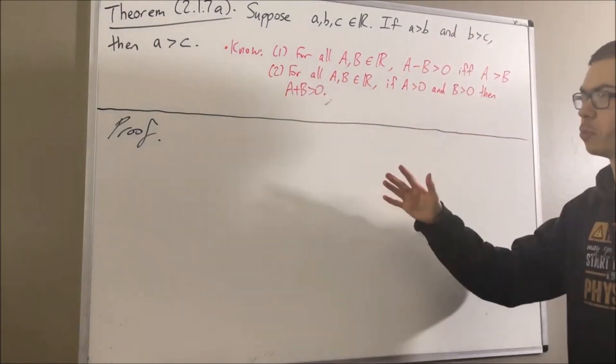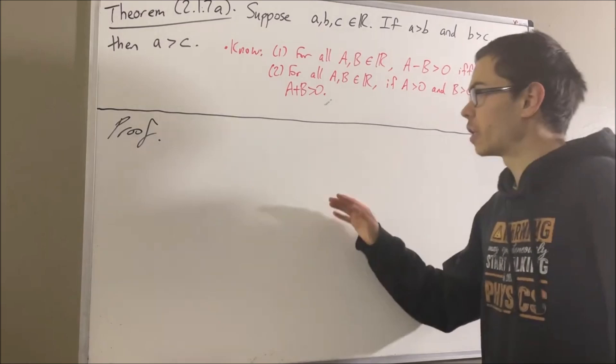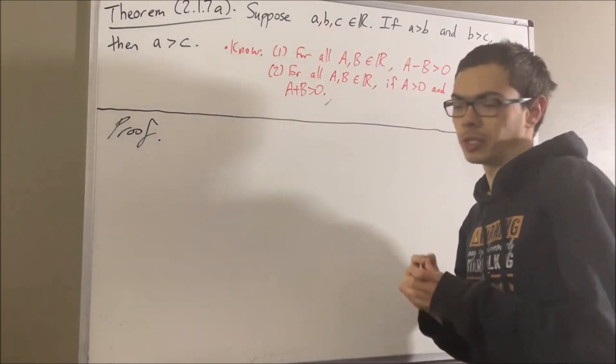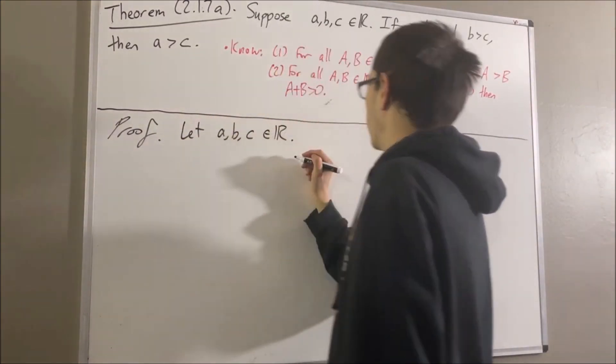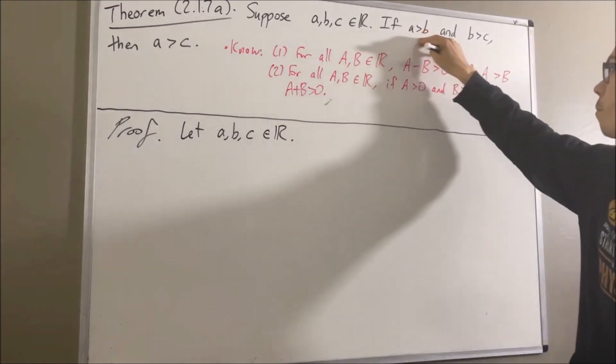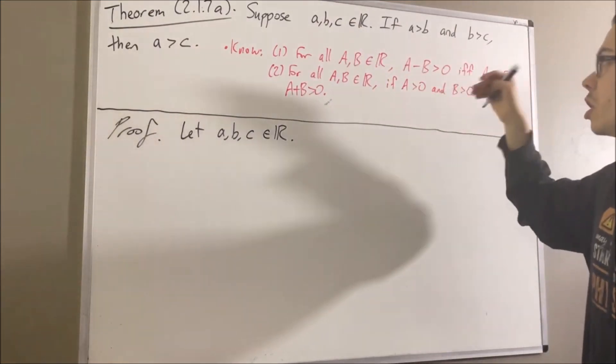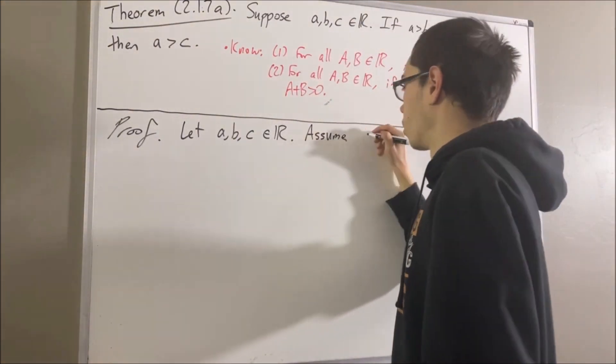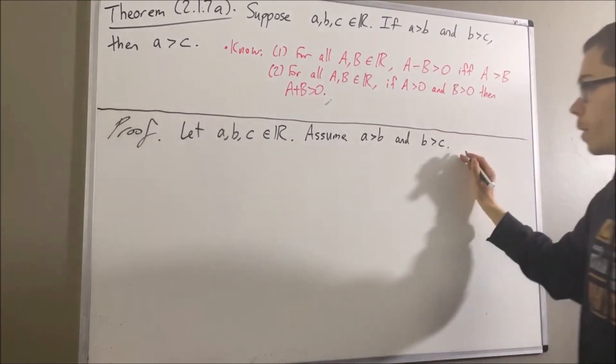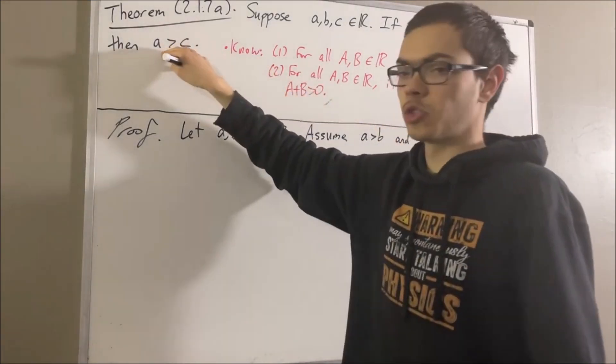Now let's get into the proof. To start out, let's suppose that a, b, and c are three arbitrary real numbers. Our goal is to prove if both of these things are true, then this is true. So let's assume that both these things are true, and our goal from here is to deduce that a is greater than c.